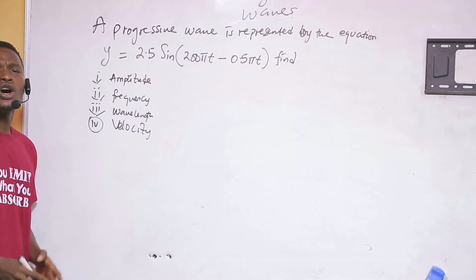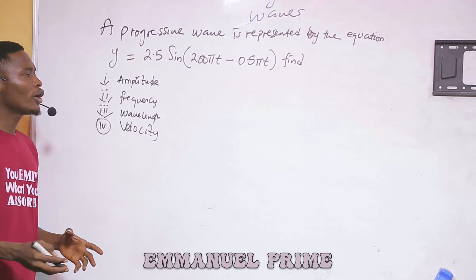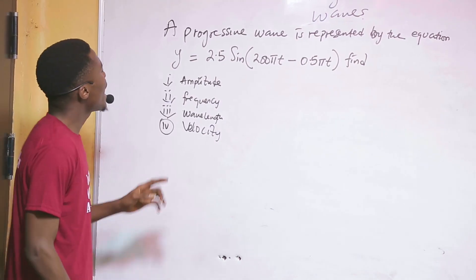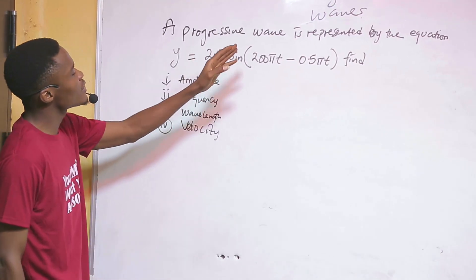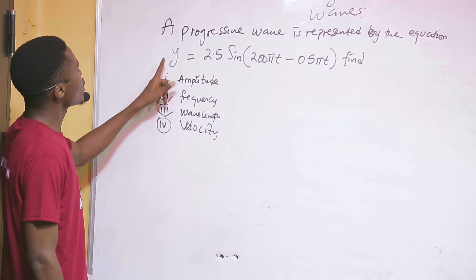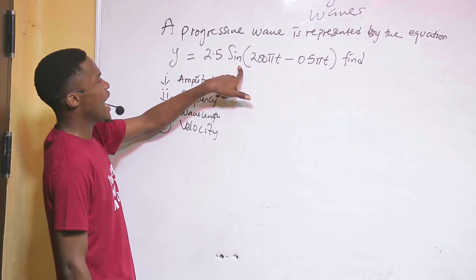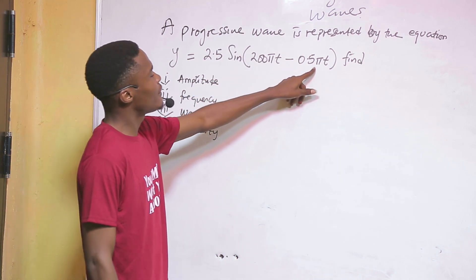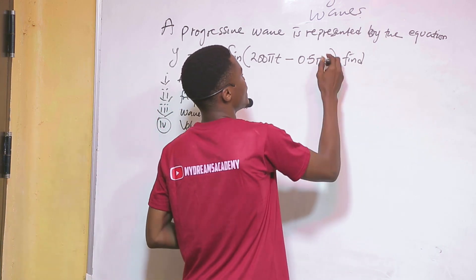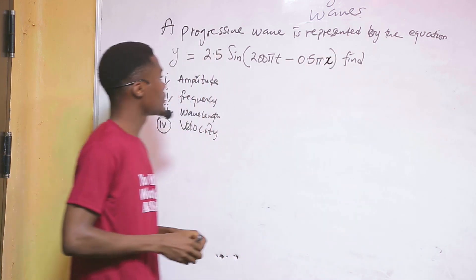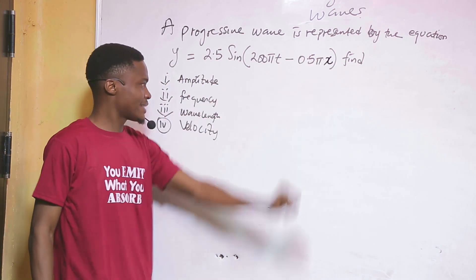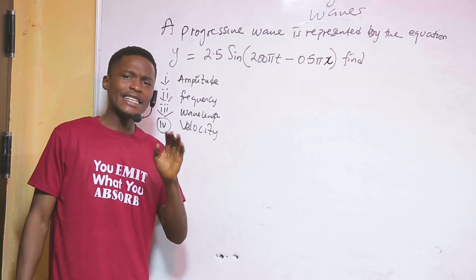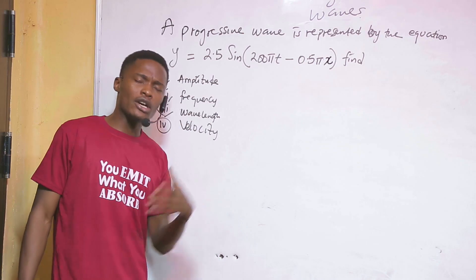We have an example question on the board. We are going to use it to test all we have learned on the equation of a progressive wave. The equation given is y equals 2.5 sine of (200πt minus 0.5πx) — note that is x, not t. We need to find amplitude, frequency, wavelength, and velocity.